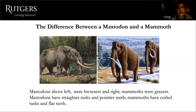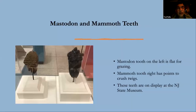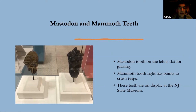There are differences between mastodons and mammoths. Mastodons were browsers while mammoths were grazers. Mastodons have straighter tusks and pointier teeth, while mammoths have curled tusks and flat teeth for chewing grasses. The mammoth tooth is flat for grinding grains, whereas the mastodon tooth has lumps and bumps for grinding twigs and sticks. Both of these teeth are on display at the New Jersey State Museum.